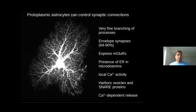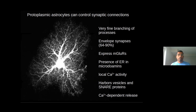Without further introduction, we know that astrocytes branch out into very fine processes that ensheath a majority of synapses in the cortex. We know that these processes express several membrane receptors, most importantly metabotropic glutamate receptors, and that they have micro domains containing ER.